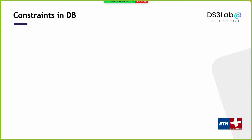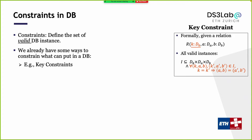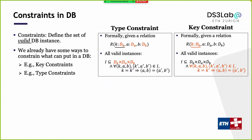Today we are going to talk about constraints in databases. Constraints give you conditions that a valid database instance needs to satisfy. We already see many ways to define constraints: key constraints give you a precise logical statement that all database instances must satisfy to be valid under this schema. We also have type constraints — whenever we define a relation, we write down the type of each attribute. If an attribute is integer, you cannot put a string into it.